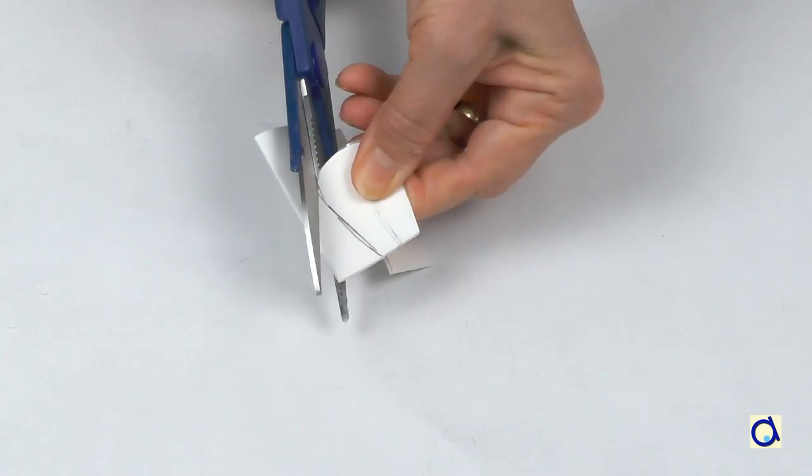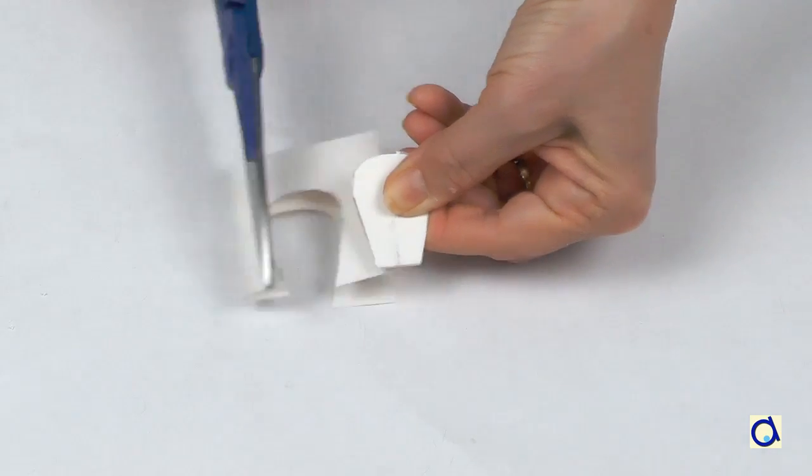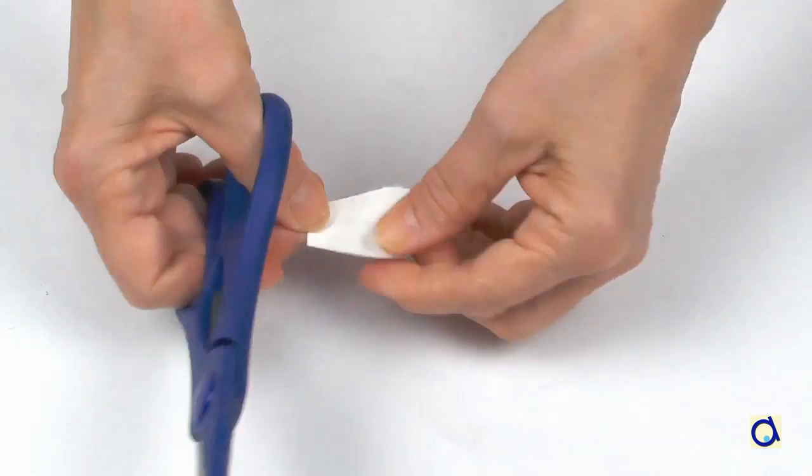Cut the two layers of construction paper. You will have the two ears of the beaver.